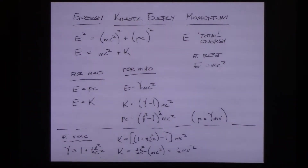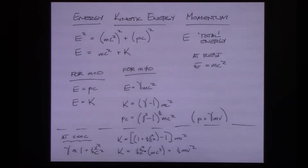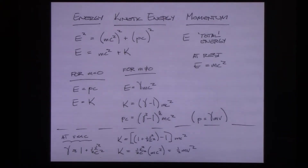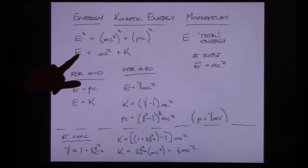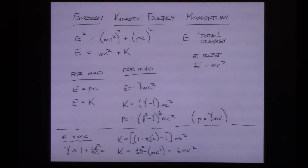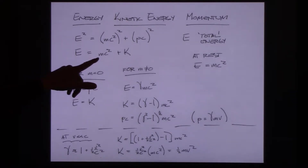When an object is at rest, its total energy equals mc². So when we say E = mc², we're talking about an object at rest — its total energy is given by its mass alone. In special relativity, energy conservation involves total energy E — it's not just kinetic energy that's conserved. When we run a reaction in which mass changes, some of that mass can be converted into kinetic energy.